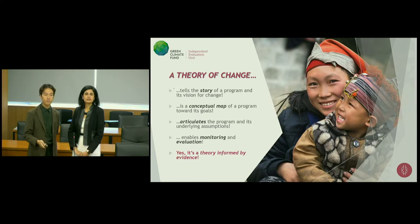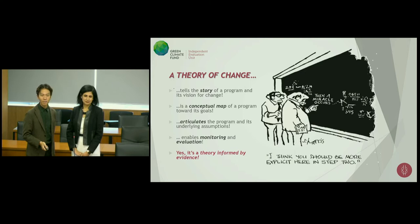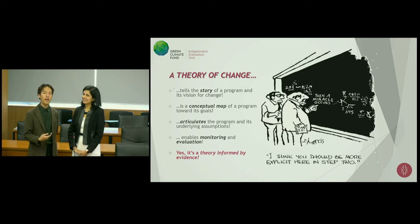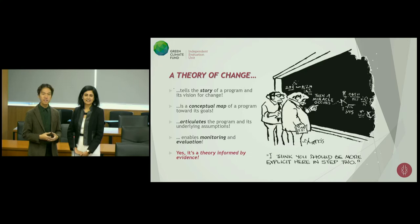Here's a quick comic to illustrate this point. You'll see these two scientists have a really complex formula, and from their beginning to their end point, a miracle happens. Many times with our programs, we have our activities and our interventions, and then we have our goals. And if we're not unpacking what's happening in the middle and listing out those assumptions, then we're almost assuming that a miracle occurs.